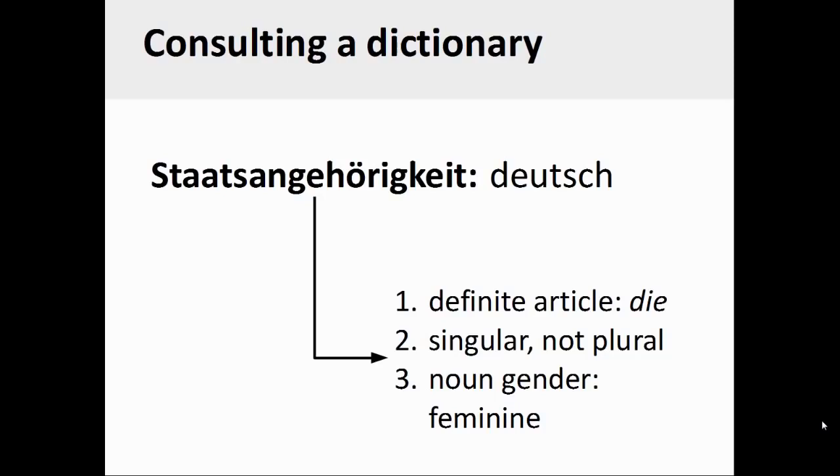Finally, you can always consult a dictionary or the module vocabulary list to determine the definite article of a German noun. Looking up Staatsangehörigkeit in the vocabulary list will reveal that it is preceded by the definite article die, which means that it could be either a singular feminine noun or a plural noun. Once we determine that the noun is indeed not plural, we can safely say that Staatsangehörigkeit is a singular feminine noun.